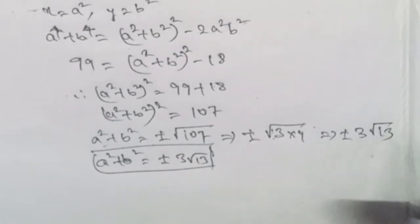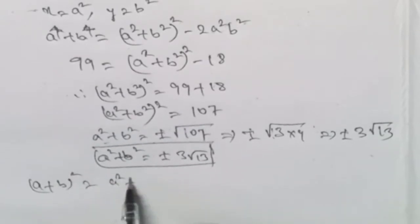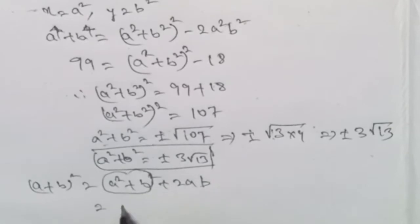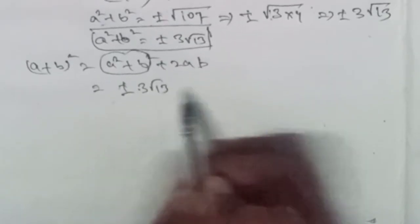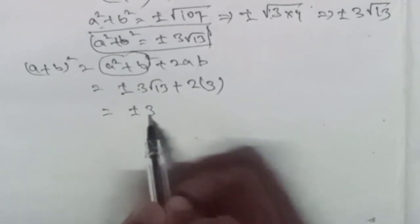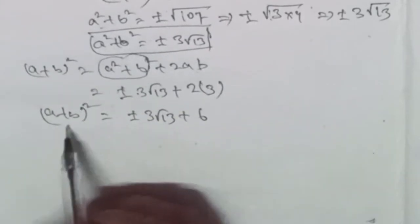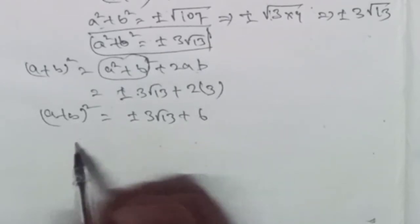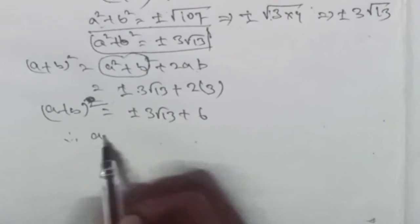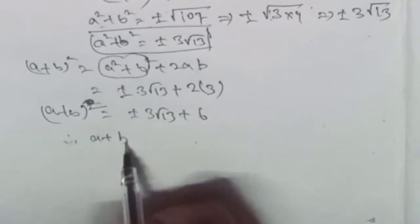Our aim is to find a plus b. We know the formula: a plus b whole square is equal to a squared plus b squared plus 2ab. We have a squared plus b squared equal to plus or minus 3 root 13, and 2 times ab is 2 times 3 equals 6. So a plus b whole square equals plus or minus 3 root 13 plus 6.